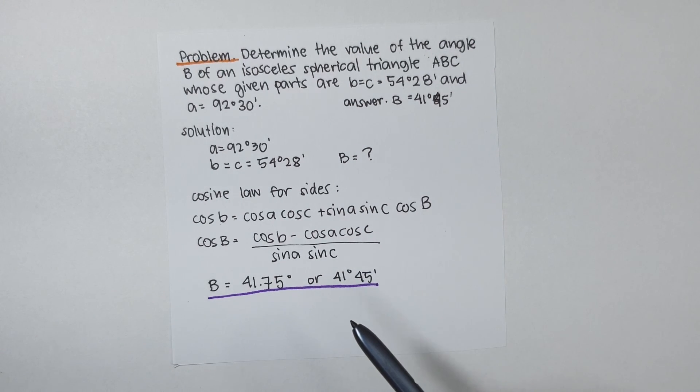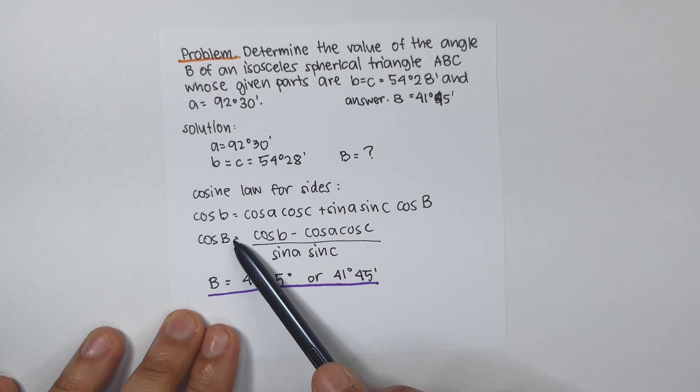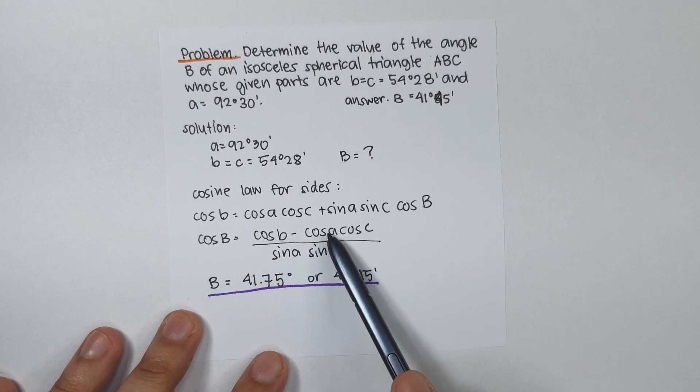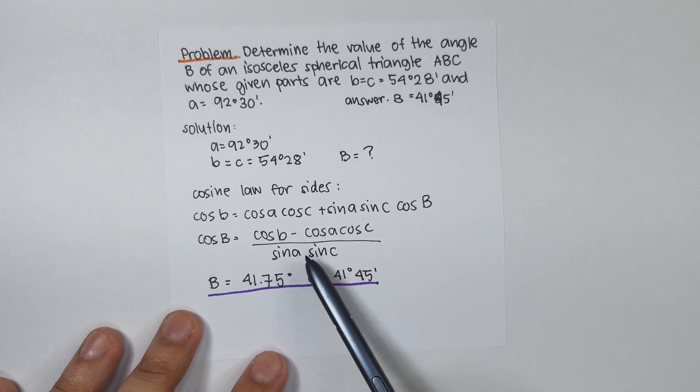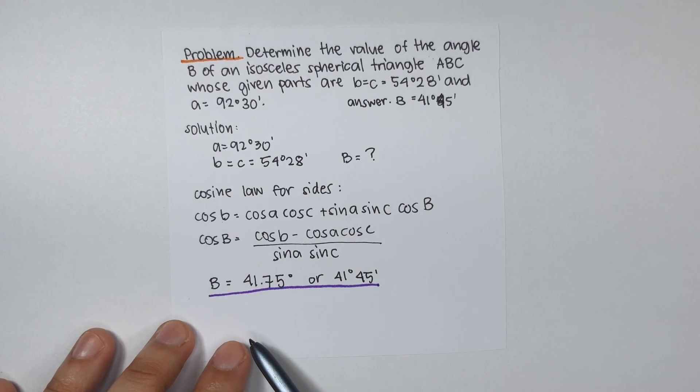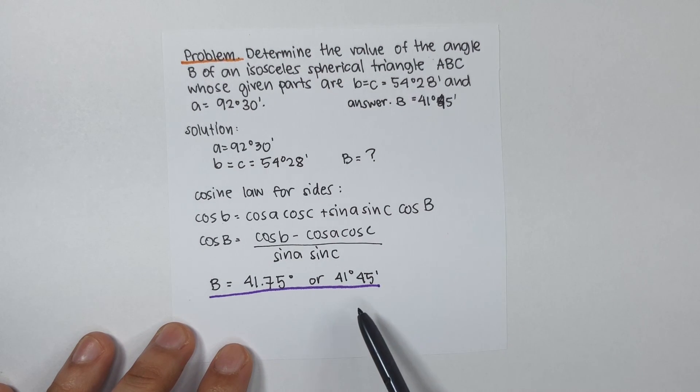So, cos B is equal to (cos B minus cos A cos C) all over (sin A sin C). Solving for B, we get 41.75 degrees.